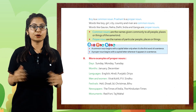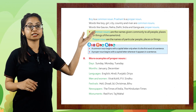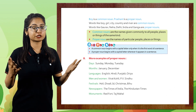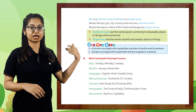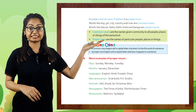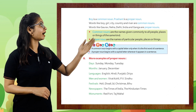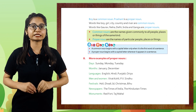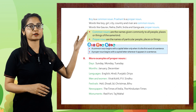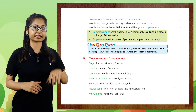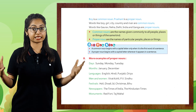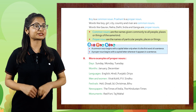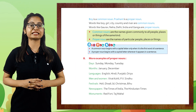'Boy' is a common name while 'Prashanth' is a proper name. Words like boy, girl, city, country, and river are common nouns. Words like Gaurav, Neha, Delhi, India, and Ganga are proper nouns. Common nouns are names given commonly to all people, places, or things of the same kind. Proper nouns are the names of particular people, places, or things.